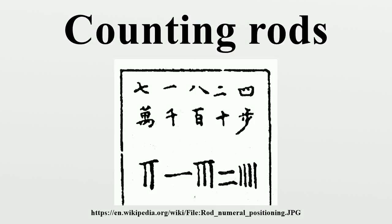Counting rods are small bars, typically 3 to 14 cm long, that were used by mathematicians for calculation in ancient China, Japan, Korea, and Vietnam. They are placed either horizontally or vertically to represent any integer or rational number. The written forms based on them are called rod numerals. They are a true positional numeral system with digits for 1 to 9 and a blank for 0, from the Warring States period to the 16th century.